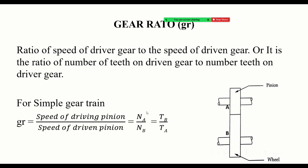You're going to learn about the ratio of speeds of two gears. This smaller gear is called a pinion, and the larger one is called a gear or wheel. The speed ratio is inversely proportional to the number of teeth ratio.